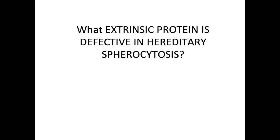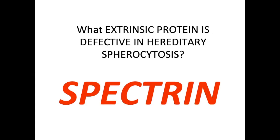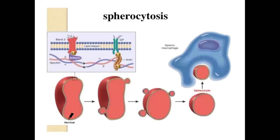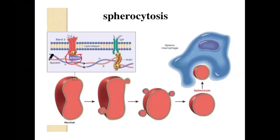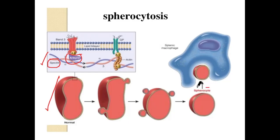Guru guide: What extrinsic protein is defective in hereditary spherocytosis? It is spectrin. Both spectrin and ankyrin, which are extrinsic proteins, are deficient in hereditary spherocytosis. For exam purposes, memorize spectrin. Due to mutations involving spectrin, the RBC assumes a spherical shape instead of its normal biconcave shape, and as the RBC squeezes through the splenic sinusoids it will easily hemolyze.